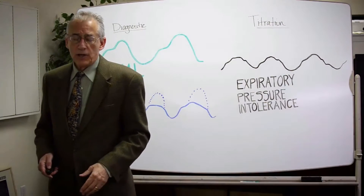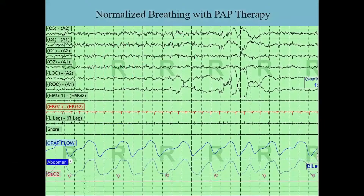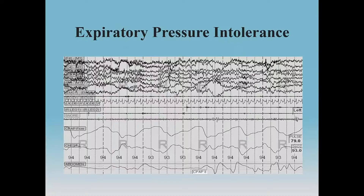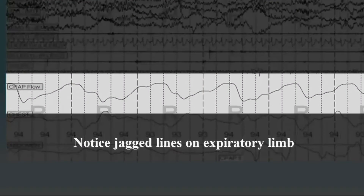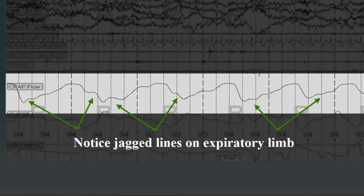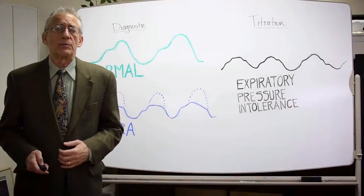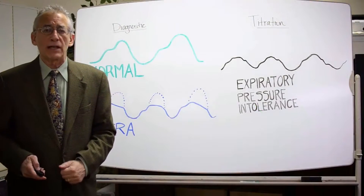As you can see on these next three slides: this is our normal breathing curve, this is an example of flow limitation with snoring, and this is the example of what happens when you try to treat RERAs with CPAP. Often you get expiratory pressure intolerance, which is a sign of both subjective and objective discomfort.